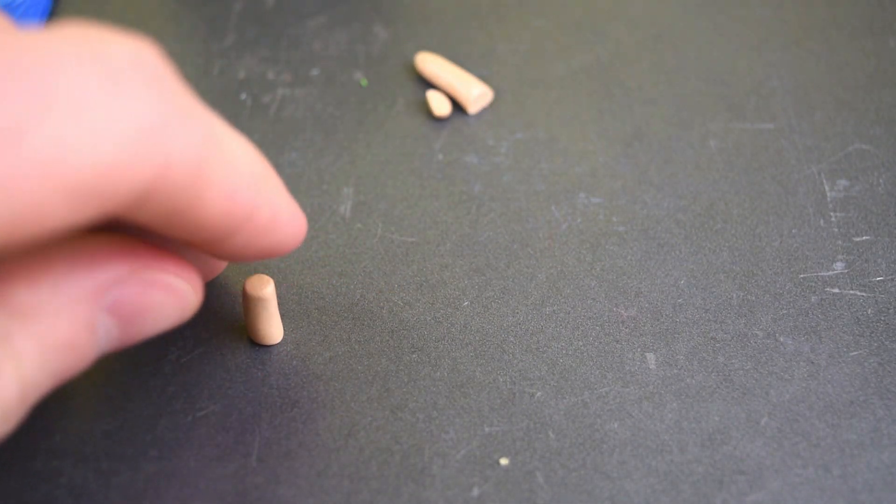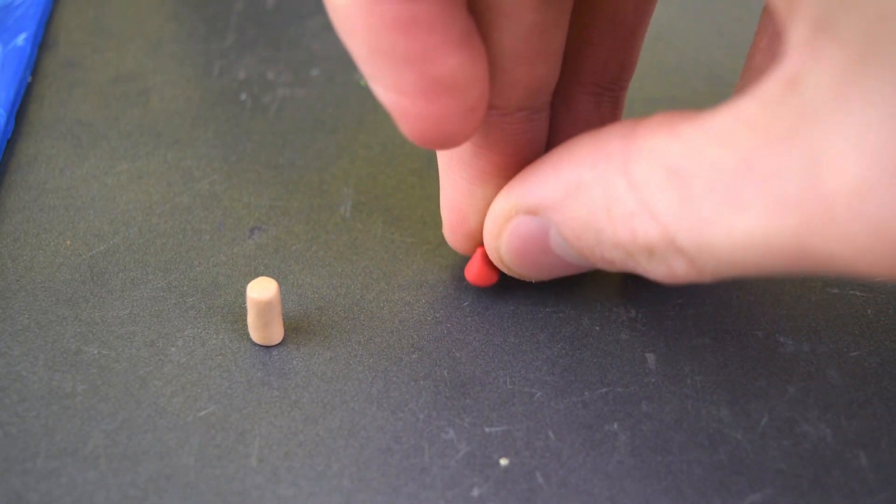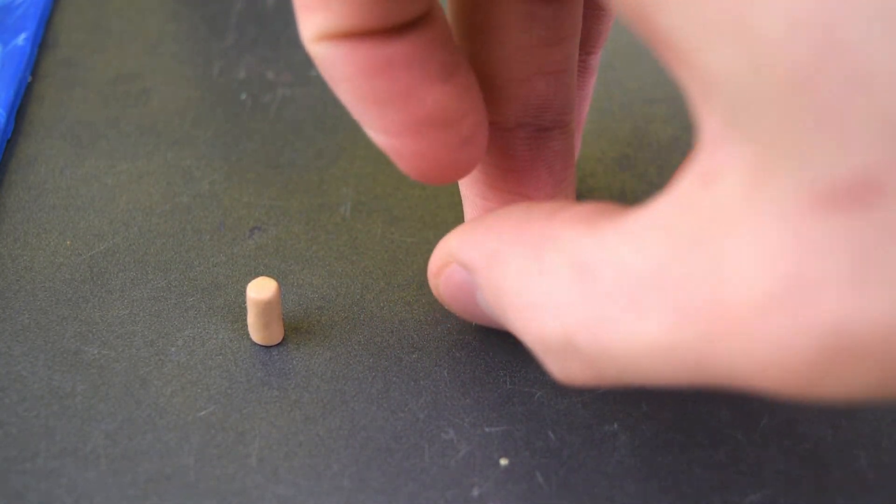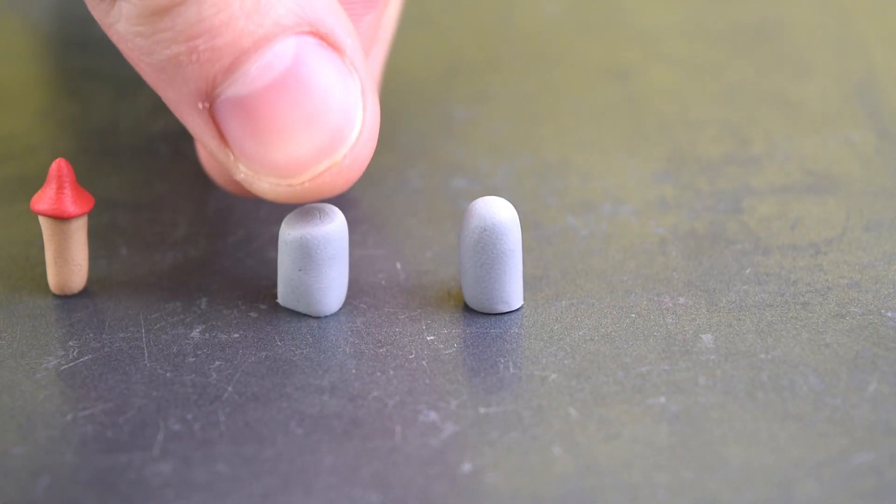This will be the wizard tower we see, or at least it looks like a wizard tower to me. We need this red triangle for the roof, and we'll add in all of the window details after baking.